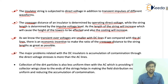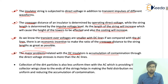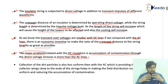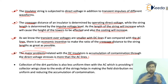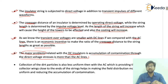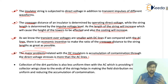The major problem related to DC insulators is that the accumulation of contamination through direct voltage stresses is more than on AC lines. If we are considering DC insulators, there is a greater chance of accumulation of contamination — dirt particles attached — compared to AC lines.